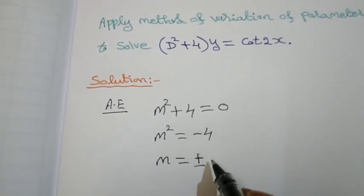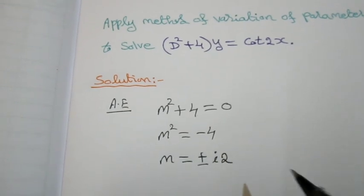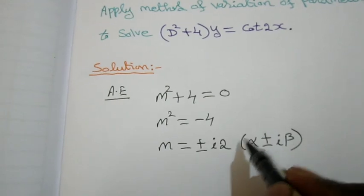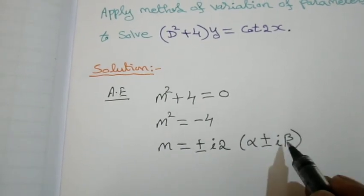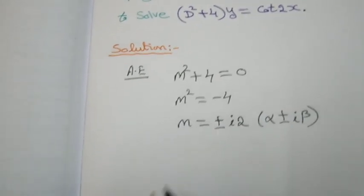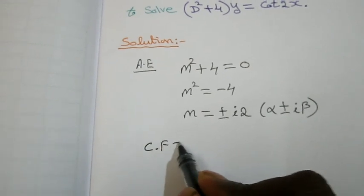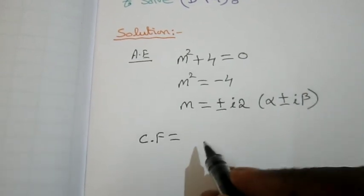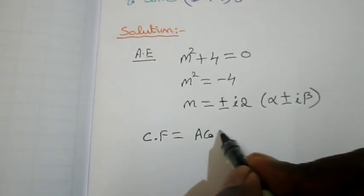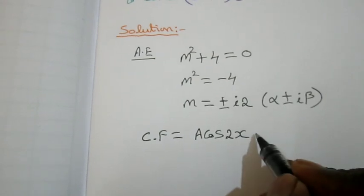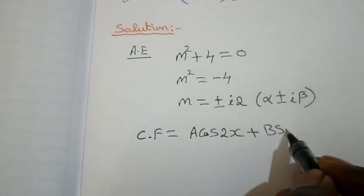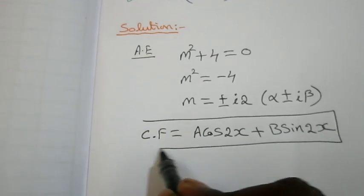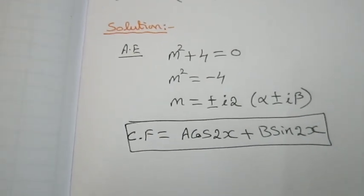...the square root of -4, which is ±2i. This is of the form α ± iβ where α = 0 and β = 2. So the complementary function is e^(αx)(A cos βx + B sin βx). Since α = 0, the CF is A cos 2x + B sin 2x.